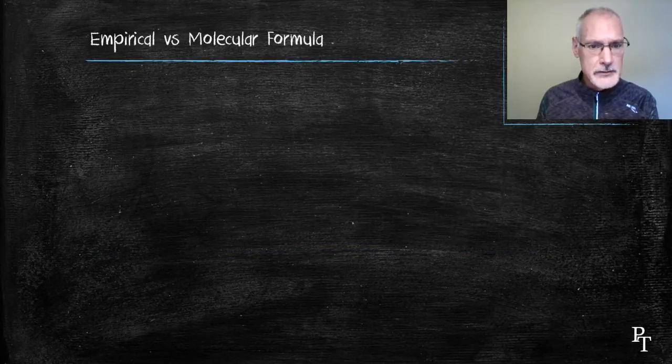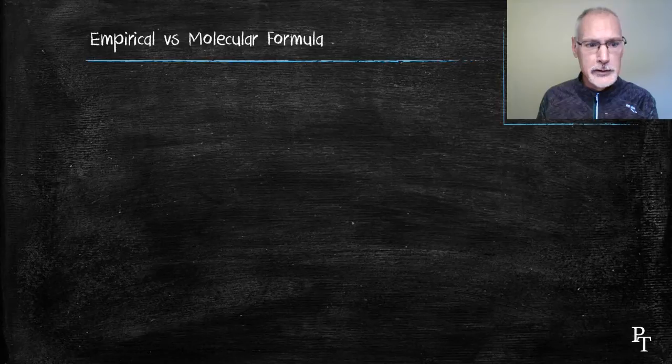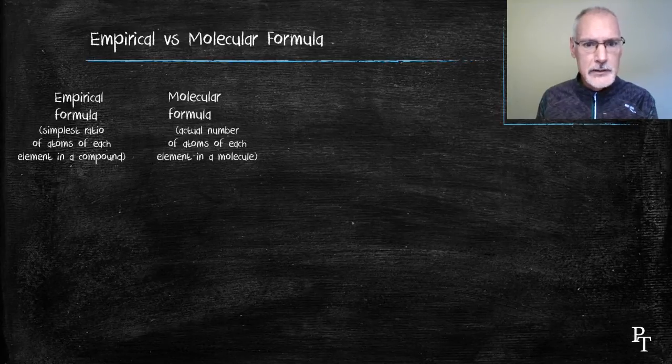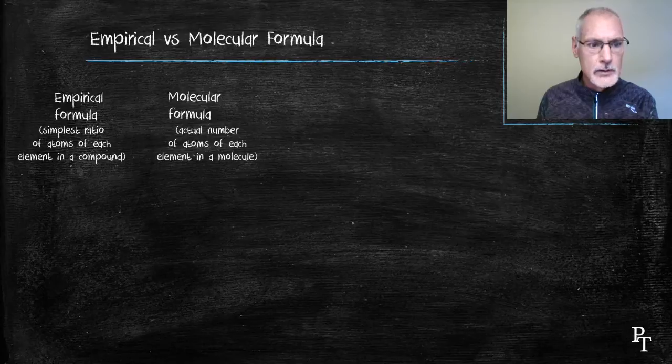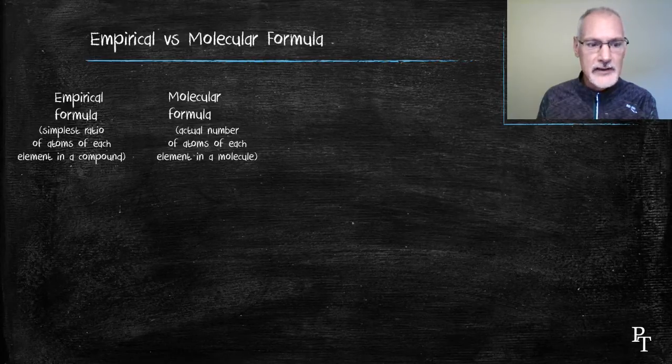Let's begin by recapping their difference, which we came across in an earlier program. The empirical formula reflects the simplest ratio of atoms that are present, whereas the molecular formula reflects the actual number of atoms that are present.